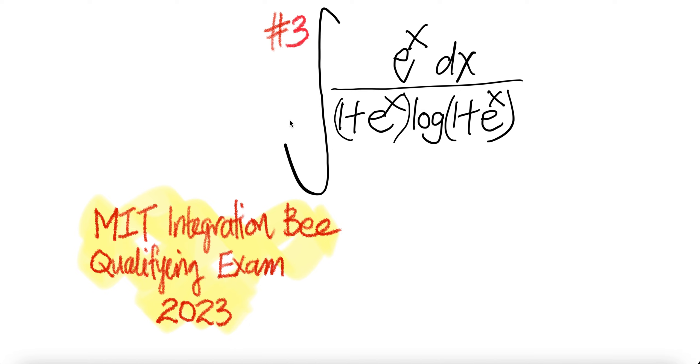Let us look at problem 3, MIT Integration Bee Qualifying Exam 2023. The integral is: e to the power x dx divided by (1 plus e to the power x) log(1 plus e to the power x). Log here is log to the base e, or ln(1 plus e to the power x).